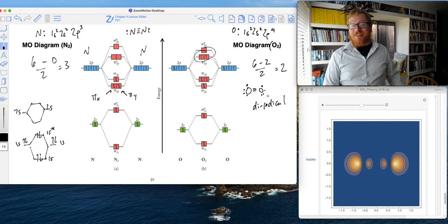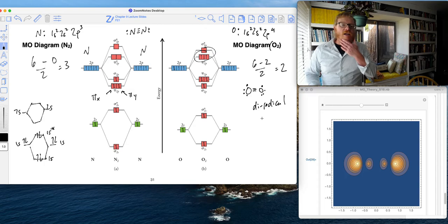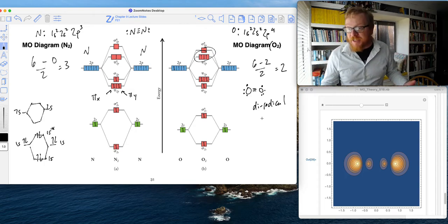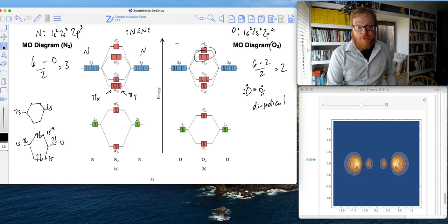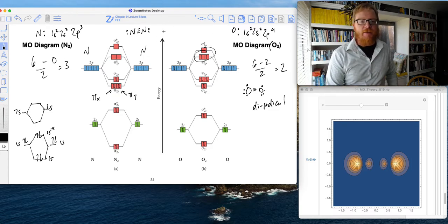It's actually a diradical. And that's part of why oxygen is so reactive. Our atmosphere—and I'm going to come back to this talking about oxygen and nitrogen at the end of this lecture.